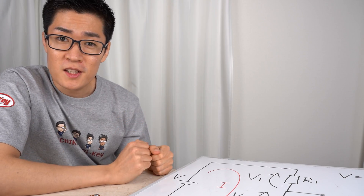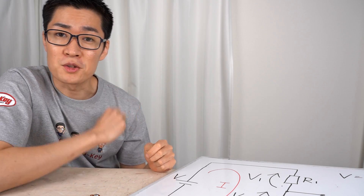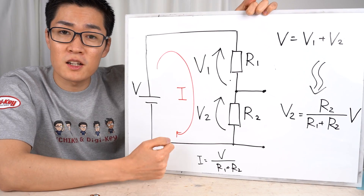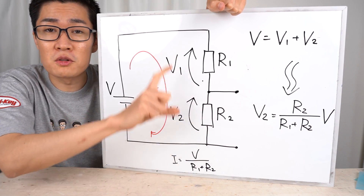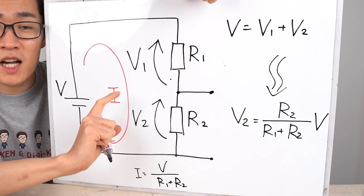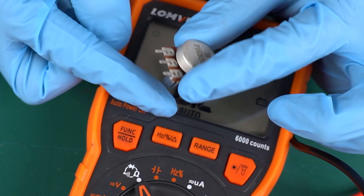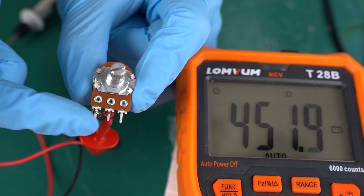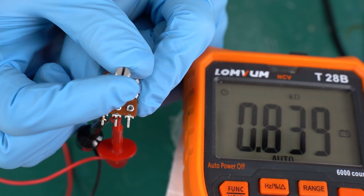Now we have seen two roles of resistors: the first is to limit the current, and the second is to act as loads. There's a third role — to divide voltage. When you connect two or more resistors in series with different resistance values, the voltage applied on each resistor differs. A variable resistor utilizes this nature. This is a variable resistor — there's a knob attached and you can rotate it. Let's measure the resistance value at the left and middle terminals. When you rotate the knob, the value changes.